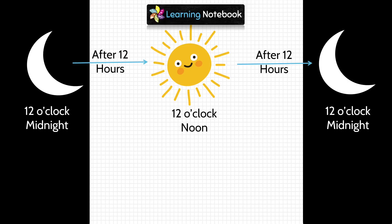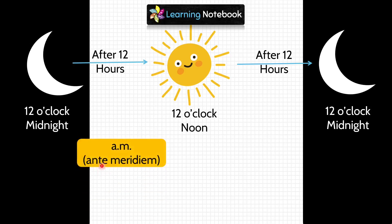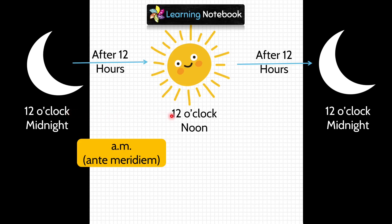So students, we use AM, that is ante meridian, for the time after 12 o'clock midnight and before 12 o'clock noon. Any time which falls between 12 o'clock midnight to 12 o'clock noon would be denoted by AM.